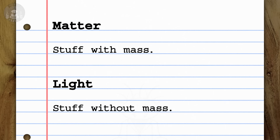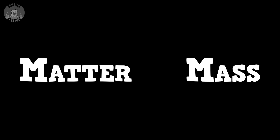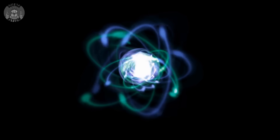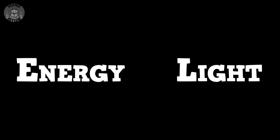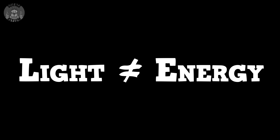For Einstein and Minkowski, matter was the stuff that had mass, and light was the stuff that doesn't. And I think this is the real source of confusion around E equals mc squared. The terms matter and mass are often used interchangeably, but they're not the same thing. Matter is just stuff that has a property we've assigned to it called mass. Mass is not a physical thing — it's an abstract number. And light has a similar confusion: the terms light and energy are often used interchangeably, especially in particle physics, but they're also not the same thing. Light is just stuff that has a property we've assigned to it called energy. Energy is not a physical thing either — it's also an abstract number.